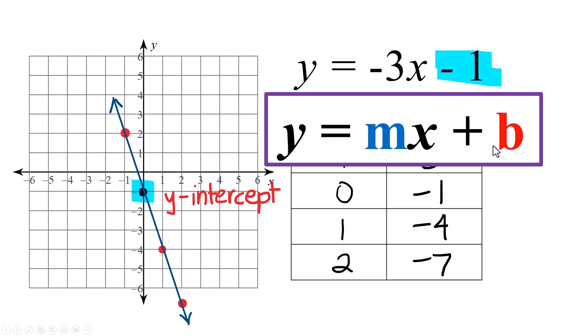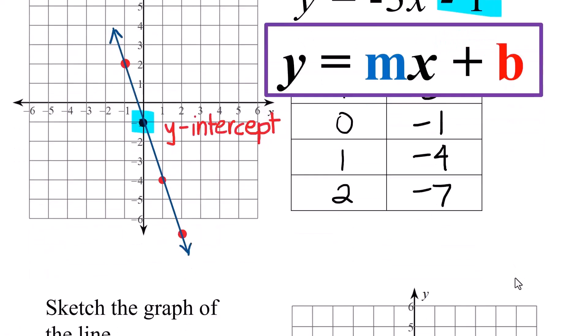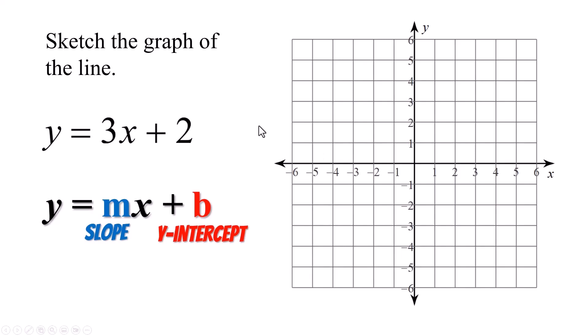Once again, y equals mx plus b holds. Now this plus with the plus b doesn't have to do with the formula. It has to do with the sign of the number. So this is negative 1, so this would be b is a negative 1. This is plus a negative 1. Alright, that is why it works. Now let's make a shortcut out of it. How can I graph without having to make a table of values just knowing what I know?